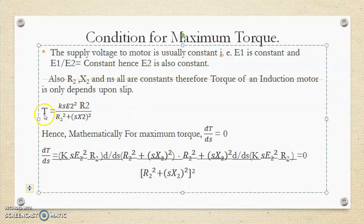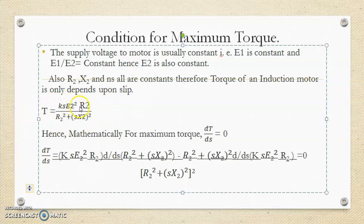In the last lecture we derived the torque equation: T equals K times E2 squared times R2, divided by R2 squared plus (S·X2) squared. In this equation, the stator input voltage E1 is a constant supply voltage, and there is a fixed relation E1/E2 is constant, hence E2 is also constant. Again, R2 is constant and X2 is also constant, so E2, R2 and X2 are all constant quantities.